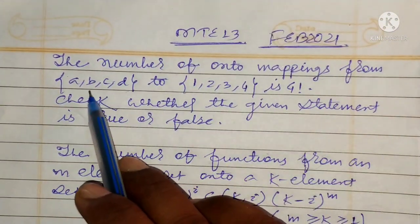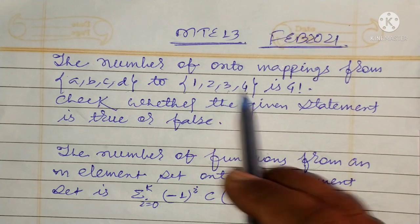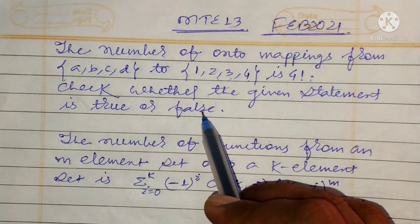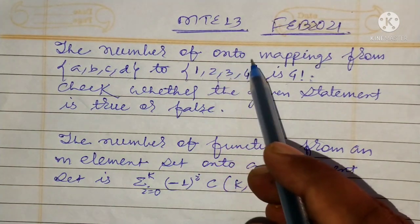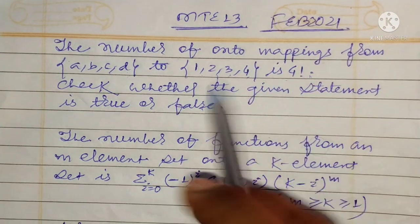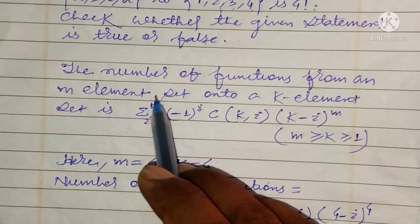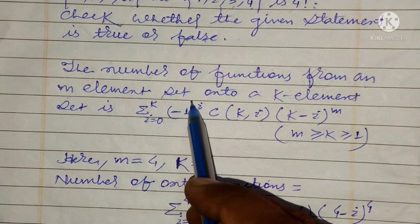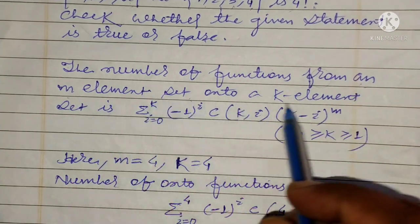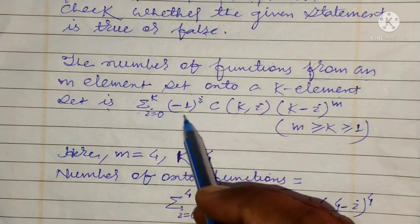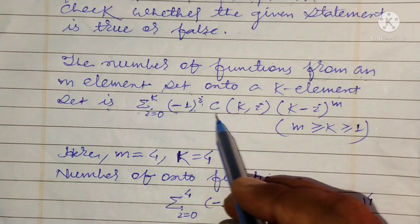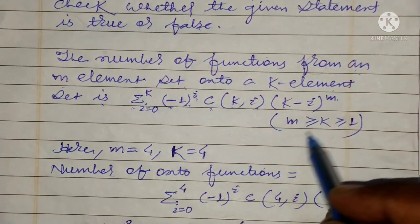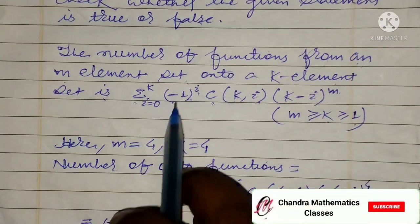The number of onto mappings from the set {A, B, C, D} to the set {1, 2, 3, 4} is 4 factorial. Check whether the given statement is true or false. The number of functions from an m-element set onto a k-element set is: summation of (-1)^i times C(k, i) times (k - i)^m, where m is greater than or equal to k, and k is greater than or equal to 1.